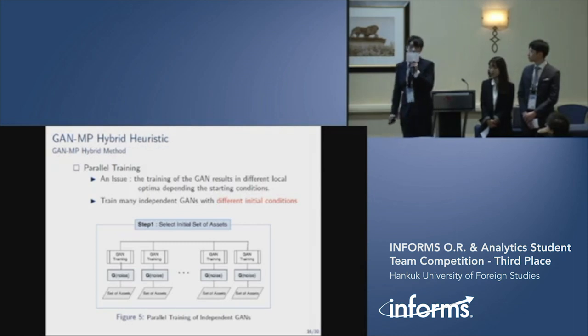So far, we've explained the concept of our GAN-MP hybrid heuristic method. Now, I talk about several ideas to improve our algorithm performance. From our result of test, we noticed that GAN is influenced by starting condition. Our algorithm could be better if we have various initial setup assets. We could get several good setup assets from multiple GANs. Therefore, using parallel training, we trained many independent GANs.